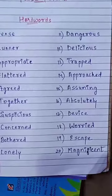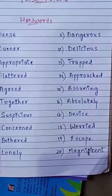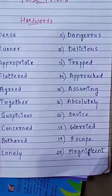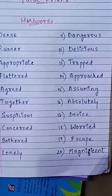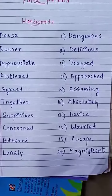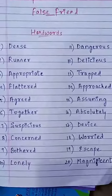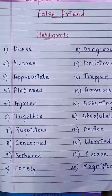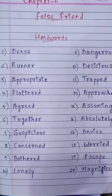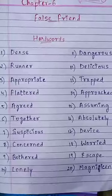Twentieth, magnificent, m-a-g-n-i-f-i-c-e-n-t, magnificent. So these are the twenty hard words of Chapter 6. Write them down in your copy. Thank you.